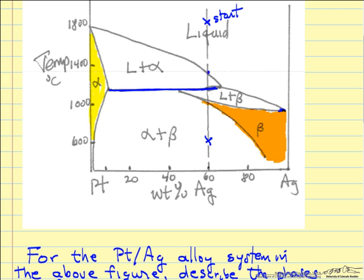At this point we start forming a solid with this composition. That solid is alpha, which means it is a completely mixed alloy — mostly platinum with a small amount of silver. So somewhere around 1300 degrees, maybe slightly higher than that, we are going to start forming an alloy that has maybe 6% silver.